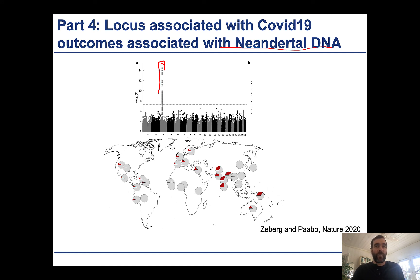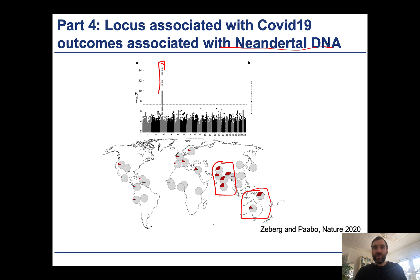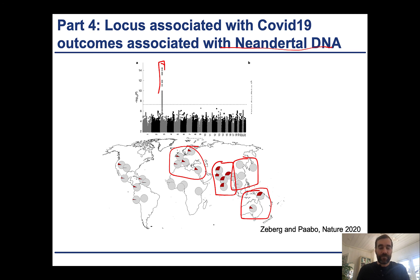Looking at the frequency of this allele in different populations, it is primarily found in India and Pakistan regions, as well as some others. This could either have been advantageous in these regions because it conferred resistance to a coronavirus specific to those regions, or it could have been selected against elsewhere because it provided susceptibility to coronaviruses and was swept away. With these evolutionary stories you don't always know the reason why, but it's a cool feature of modern research — we're actually starting to identify ancient hominin DNA and tease apart its effects in modern humans.